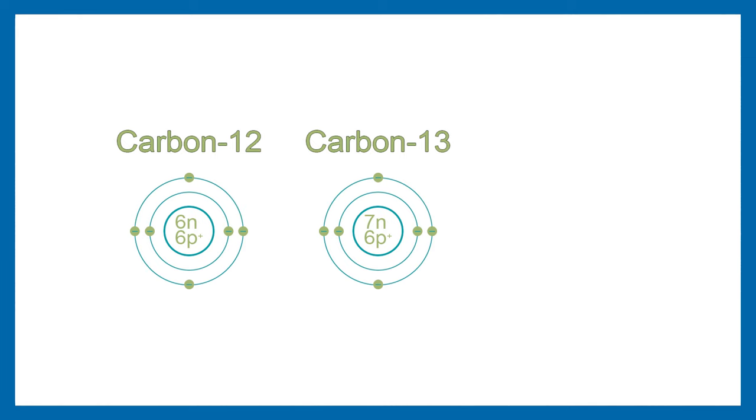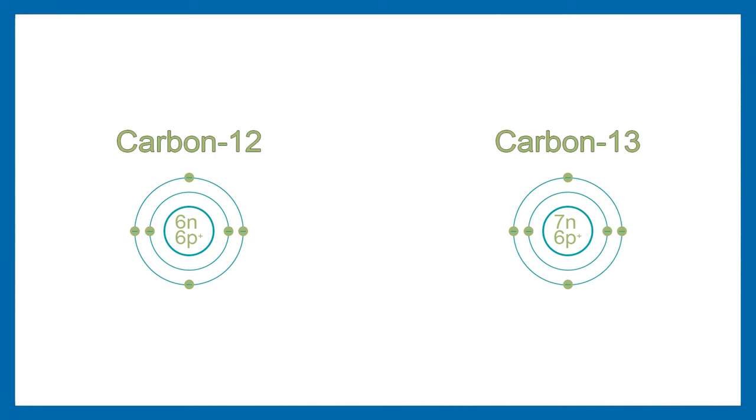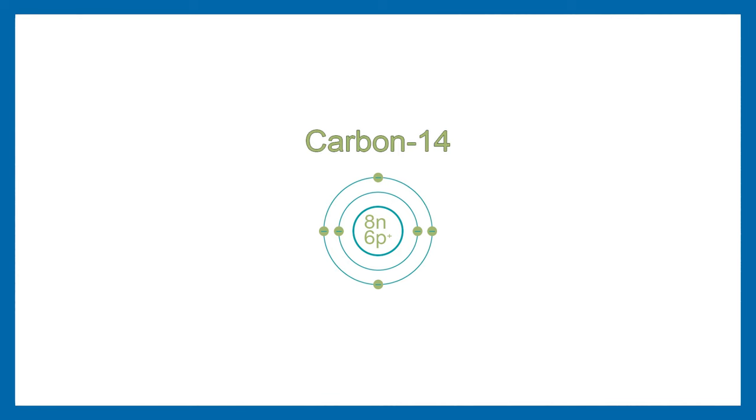But there is also isotope C-13 and radioactive and therefore not stable carbon-14, also known as radiocarbon, with a half-life of 5730 years plus minus 40 years. So if you have 1000 atoms of C-14, in 5730 years you will have only 500 of them, and after another half-life you will just have 250 atoms.